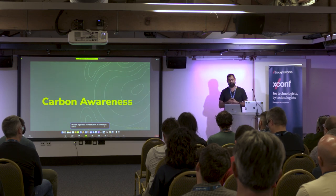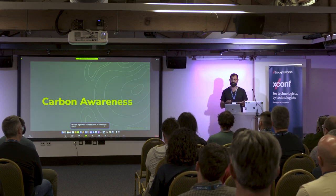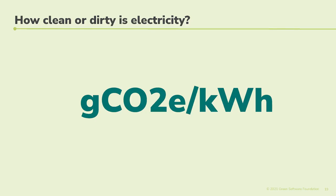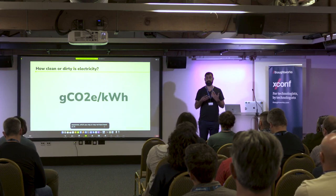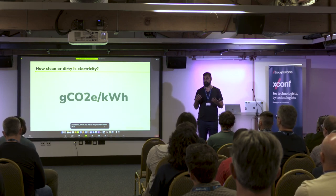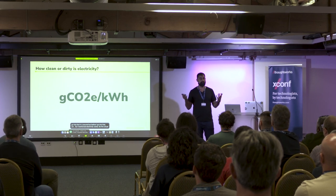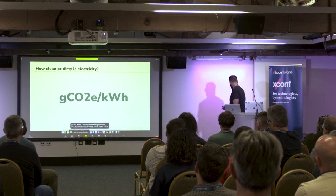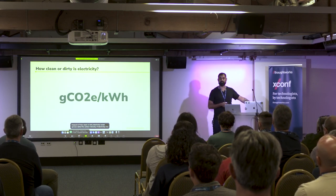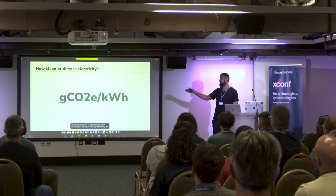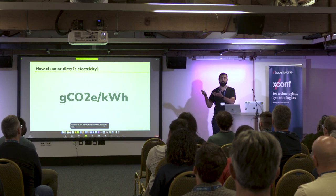Another really interesting field is carbon awareness. The actual measure of how clean or dirty electricity is called the carbon intensity of electricity. It's published for many grids around the world — the UK grid has a number as well. Every bit of electricity coming out of any socket in the world has a measure of carbon intensity, which is grams of carbon dioxide equivalent per kilowatt hour.